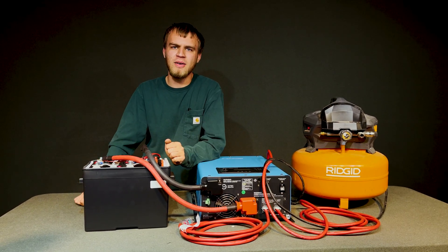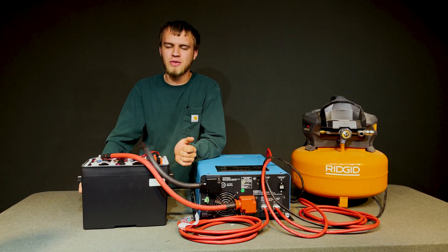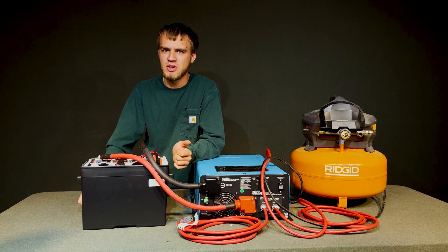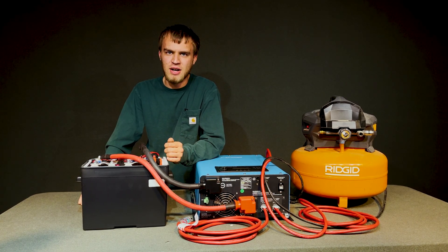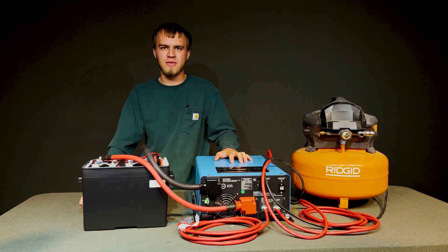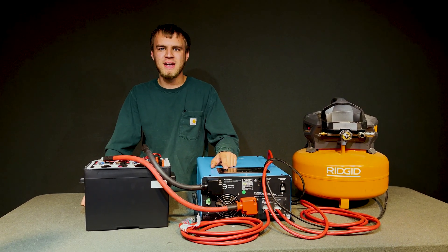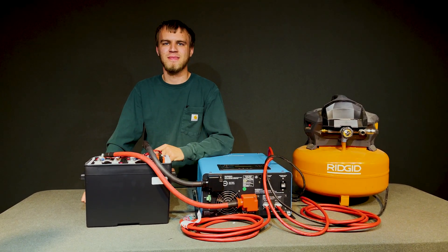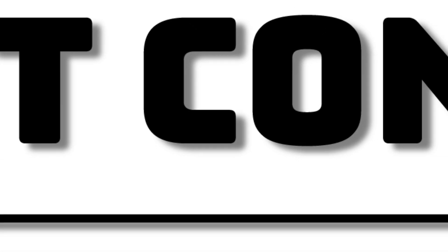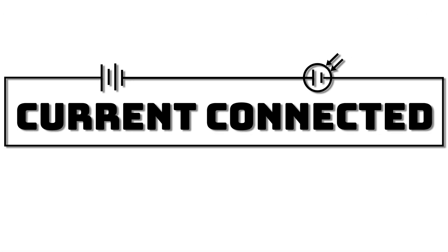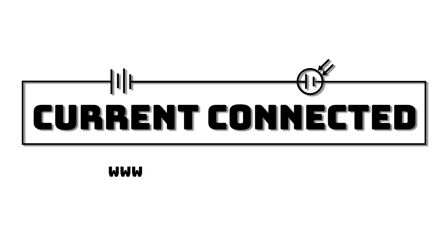We're going to build a 12 volt battery that fits perfectly in a group 24 battery box that most RVs already have that has enough kick to power this 2000 watt inverter that can run this pancake air compressor. You're watching Current Connected. Check out our website at www.currentconnected.com.